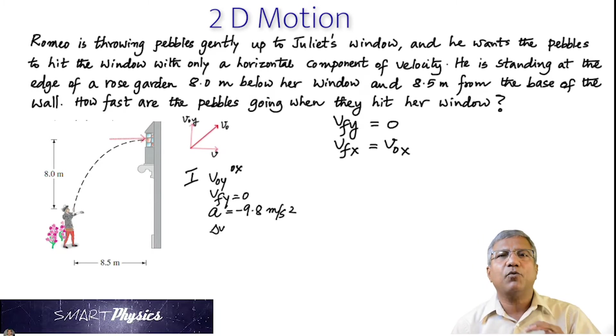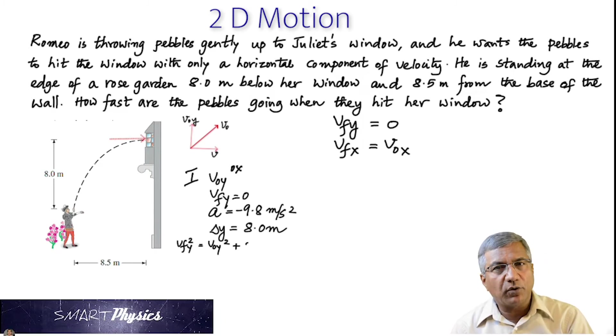And delta Y, which is the vertical displacement, is given as 8.0 meter. So the kinematics equation that connects these quantities is VFY squared is equal to V0Y squared plus 2A delta Y.